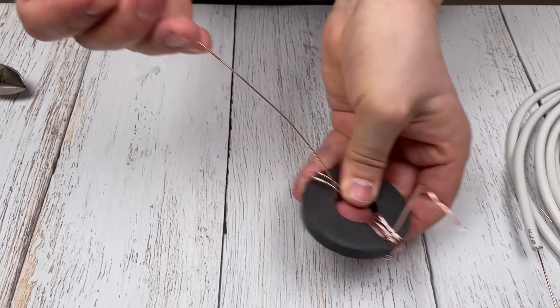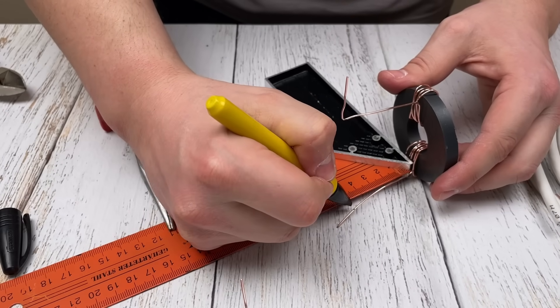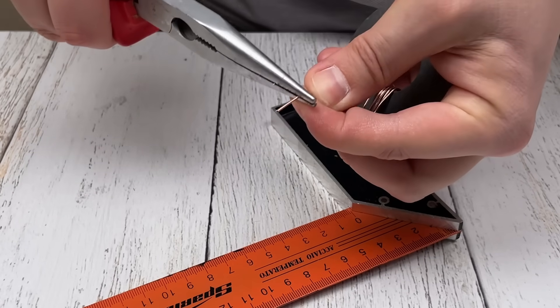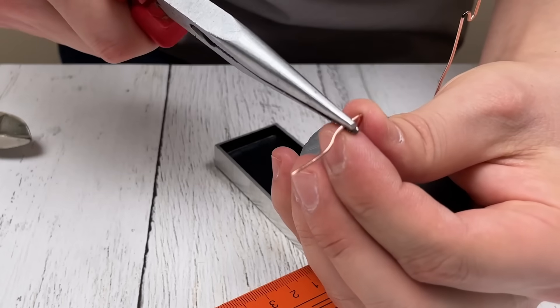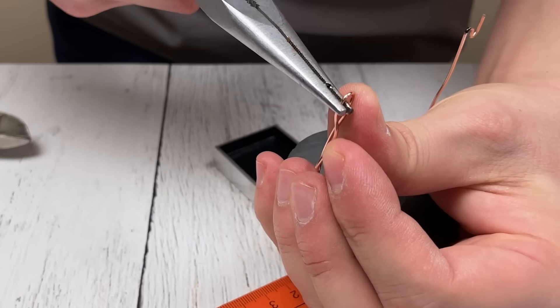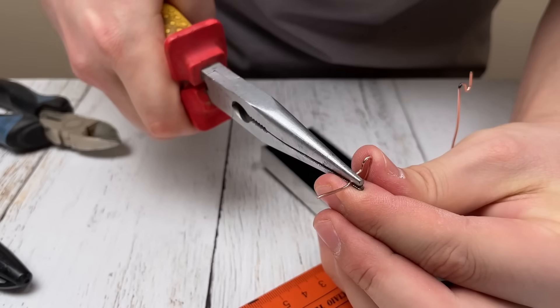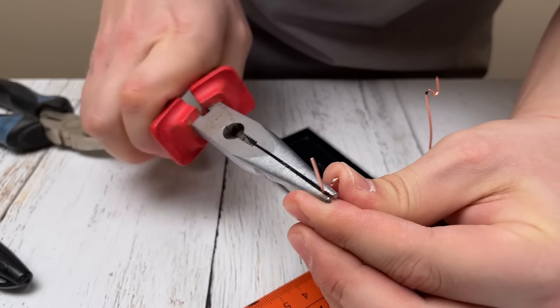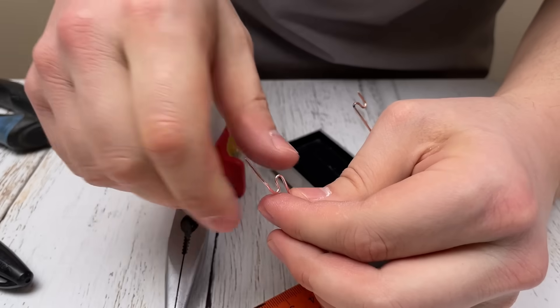After winding the wire, bend the ends of each piece of wire at a specific angle to create the optimal shape for receiving the signal. It is important to perform this operation carefully and evenly to ensure the best performance of the antenna.